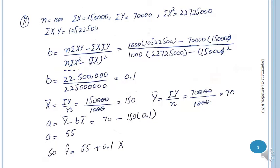The second part is similar to the previous one because here Σx, Σy, Σxy are given. You select the variable form b formula, substitute the given information, and calculate. b = 0.1, and after calculating x-bar and y-bar and using a = ȳ − b·x̄, a = 55. So ŷ = 55 + 0.1x.